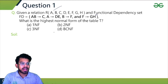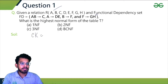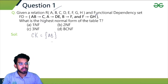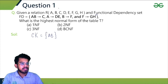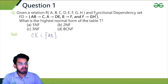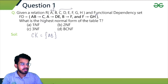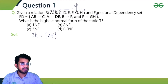In order to find out the highest normal form, we have to find out the candidate keys first. If we try to find out the candidate keys of this relation, the candidate key will be AB. AB will be the one and only candidate key of this relation. So A and B are the prime attributes, and from C to H are the non-prime attributes, because A and B are part of at least one candidate key.